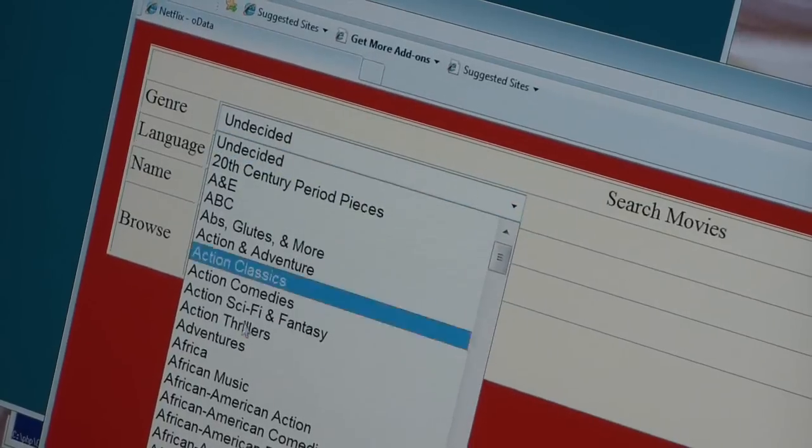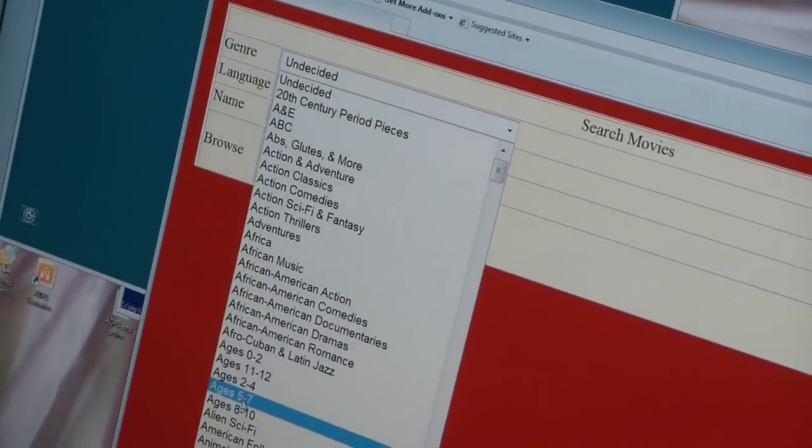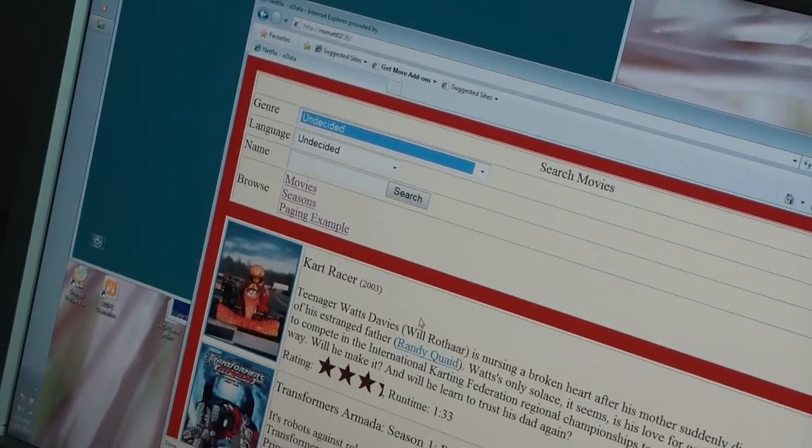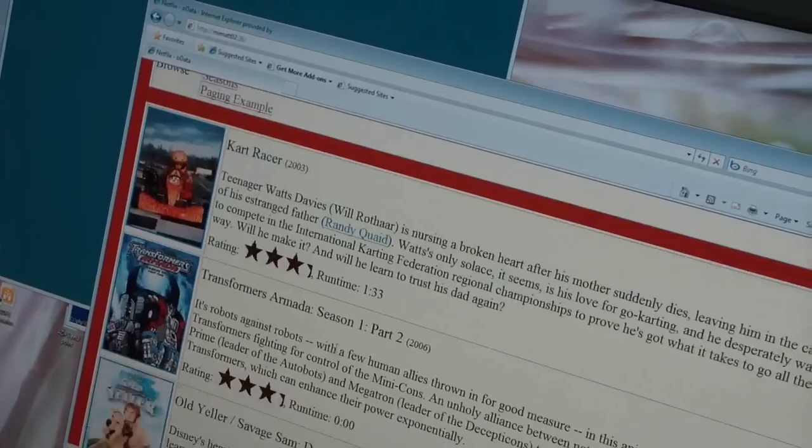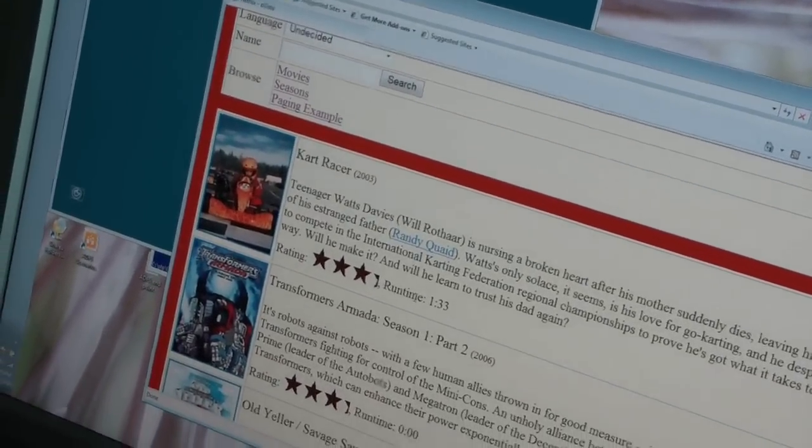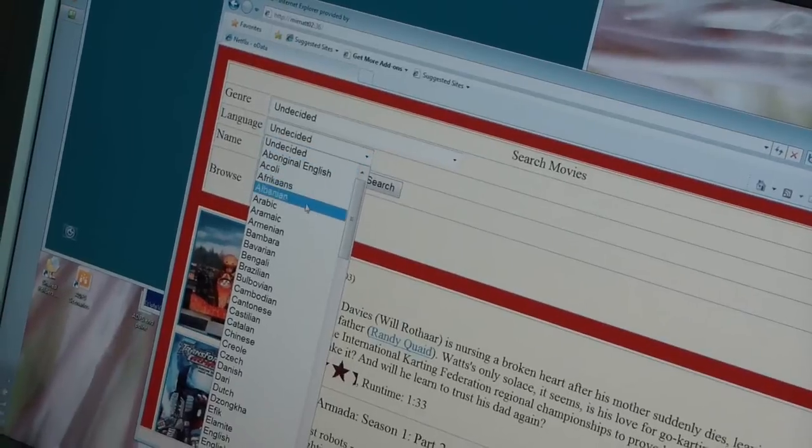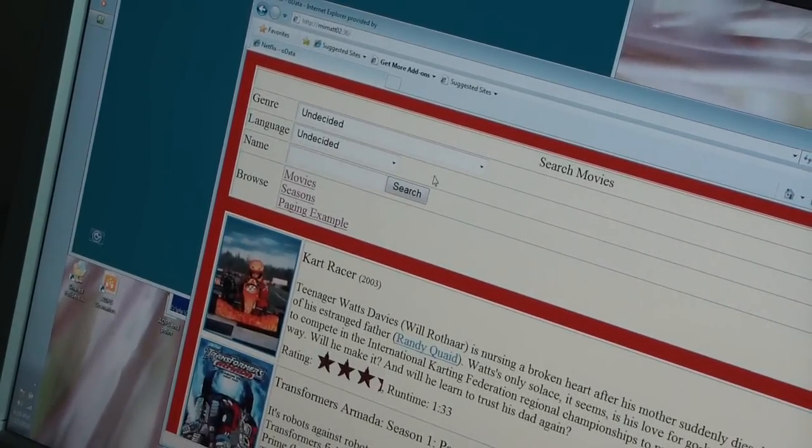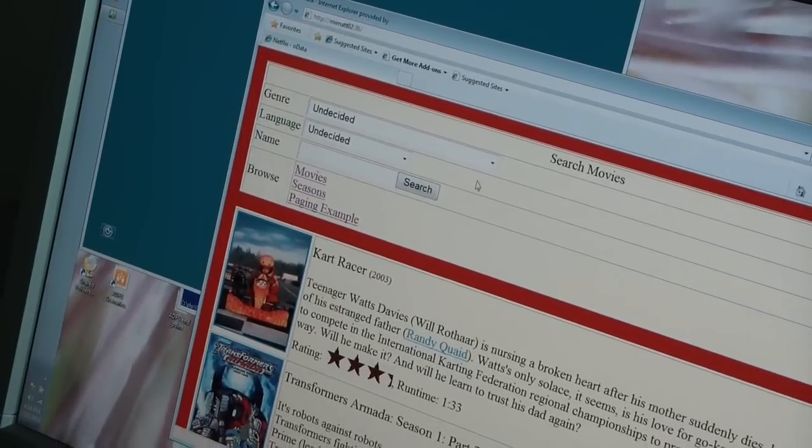What we did is to build a very simple search-like type of application using some of the features built in the OData framework. In this case, for instance, you see this list of genres. This is data that is coming directly from the service. I can select one specific set of movies that I want to see. By querying the web service, I get the data that I am looking for.